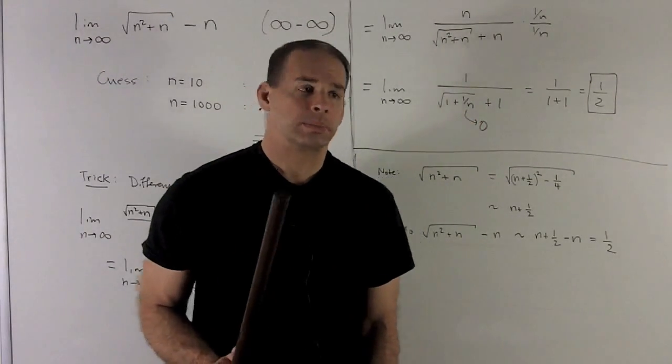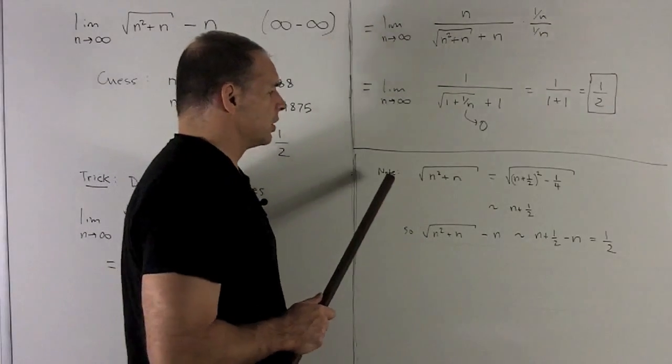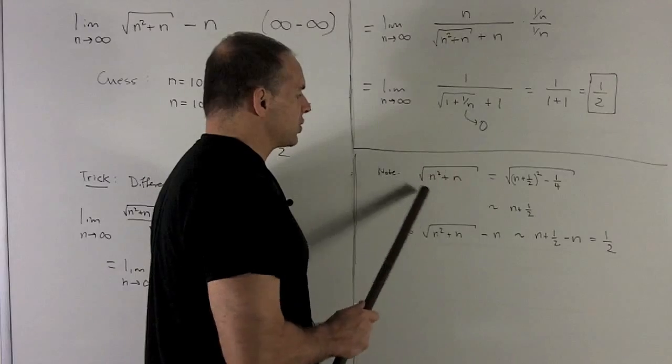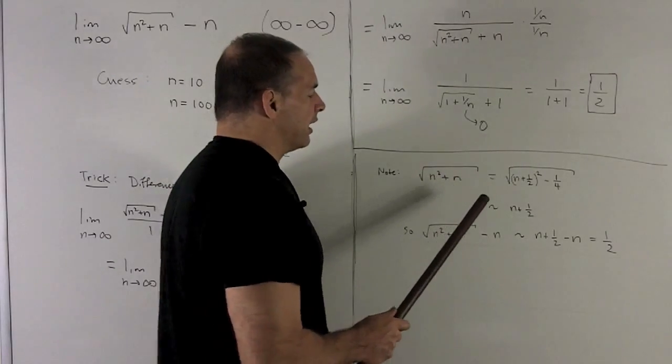Okay, another way to guess this, let's take a look. If I take radical of n squared plus n, note that I can complete the square here. That's going to give me radical...